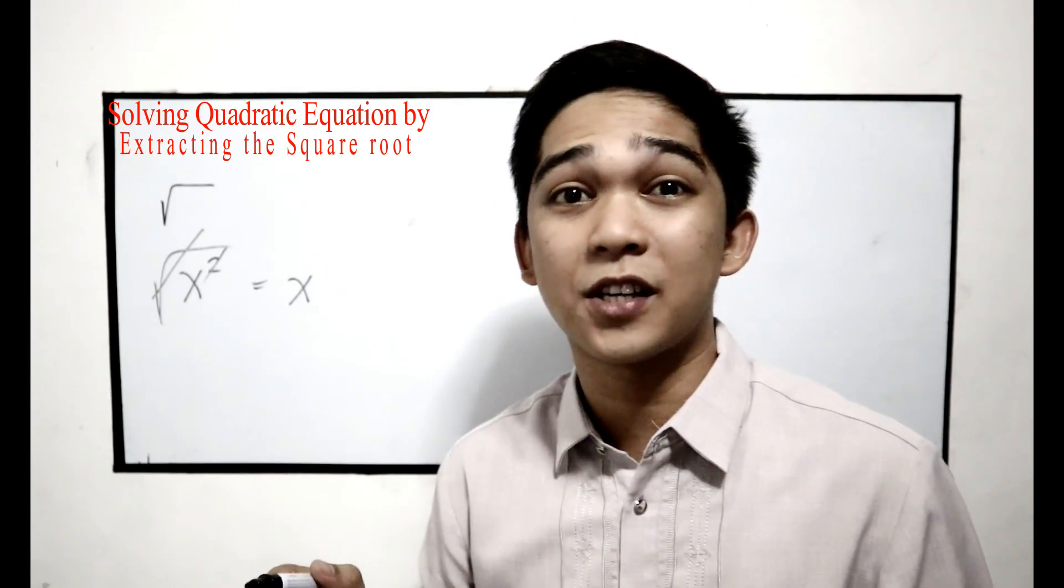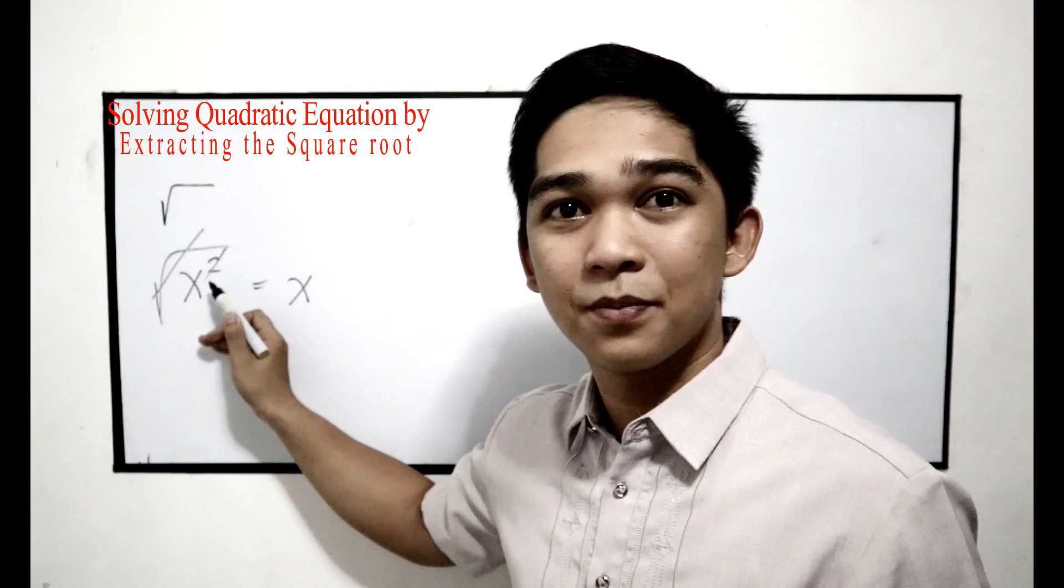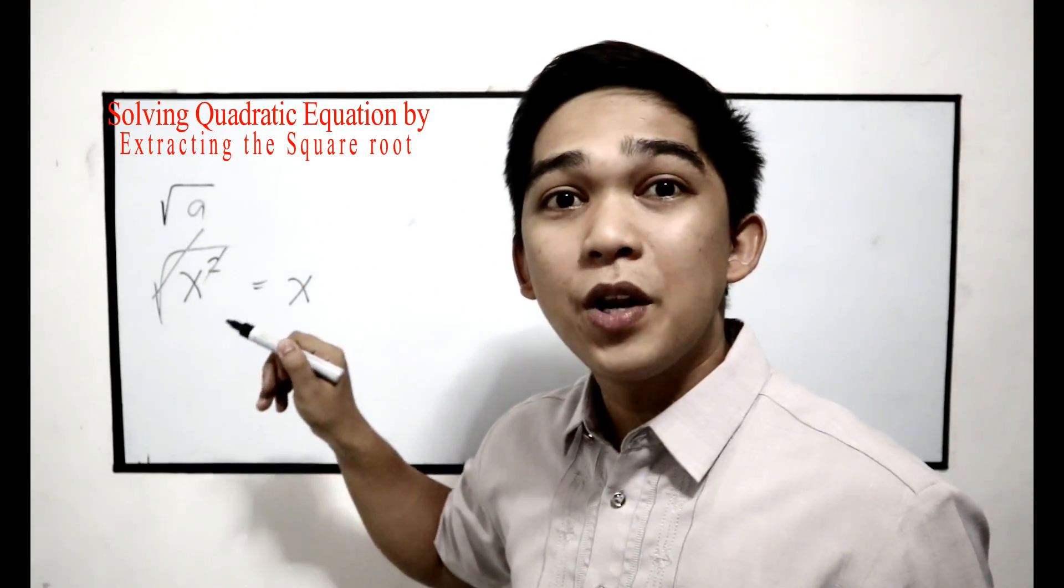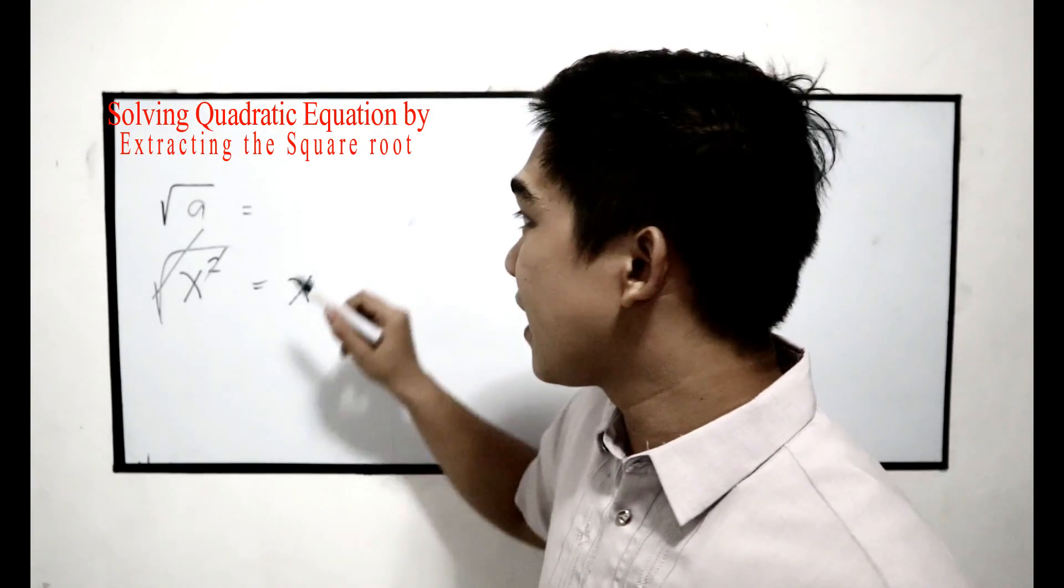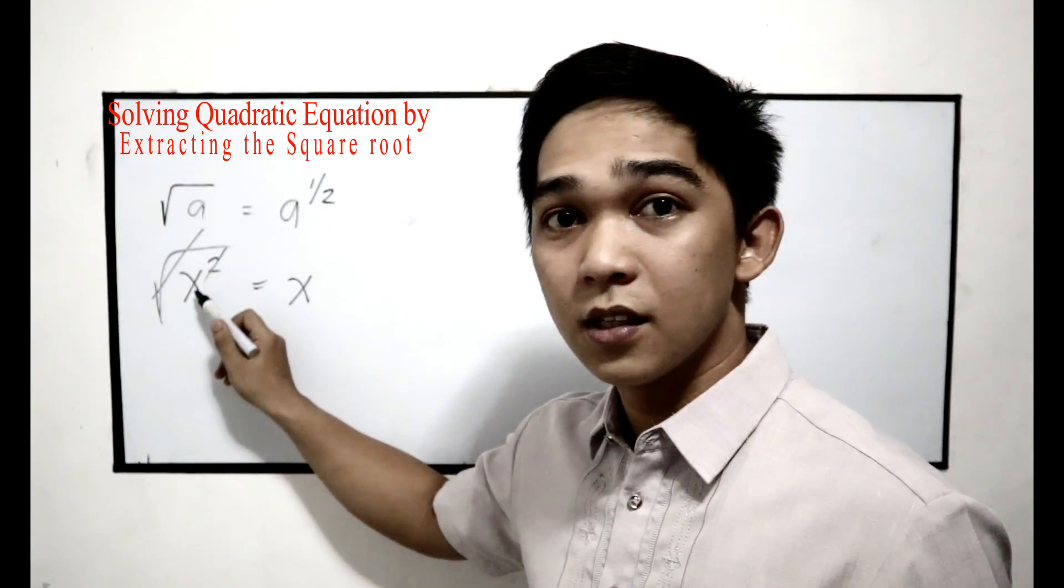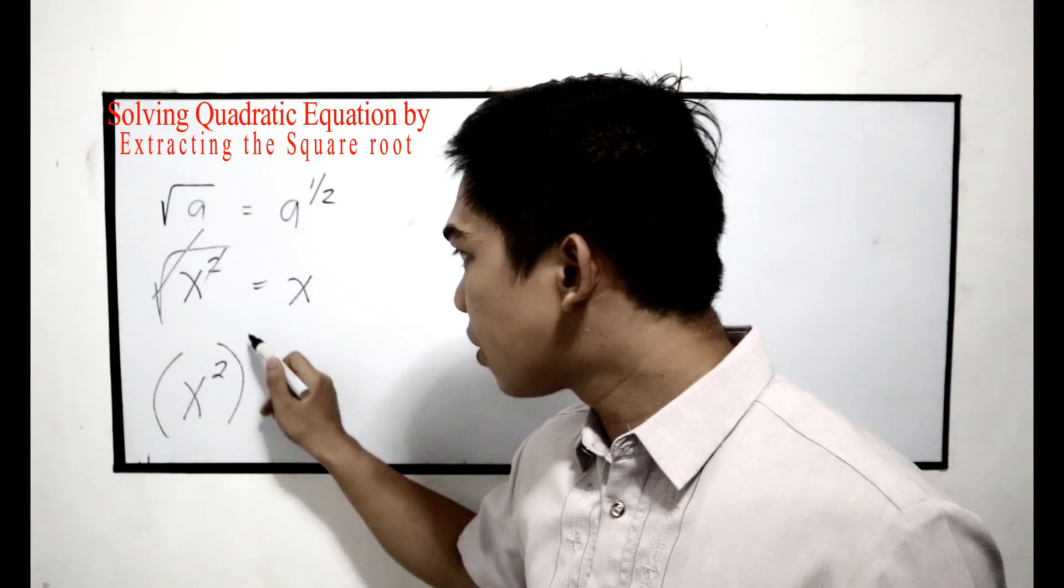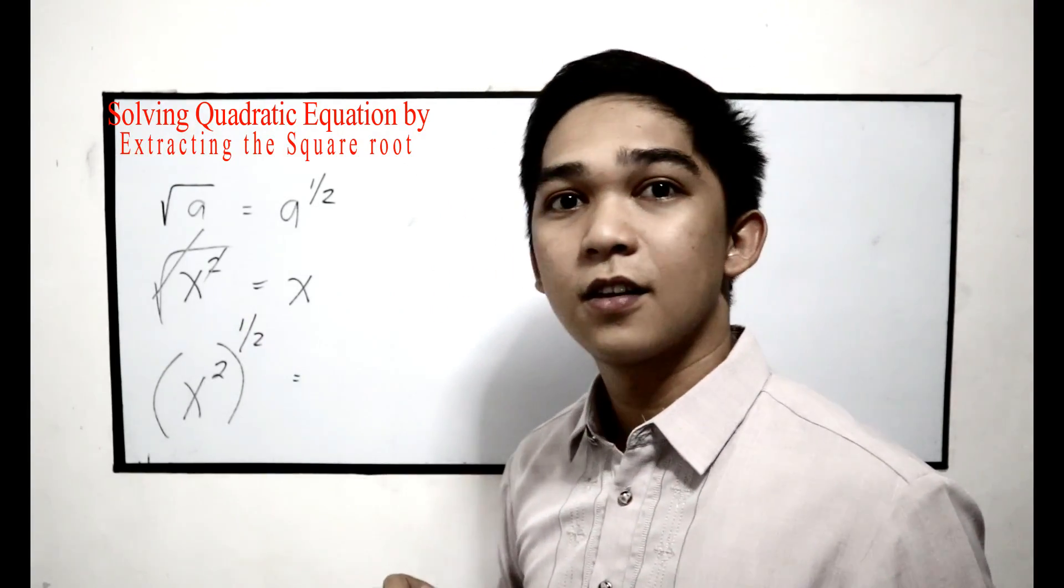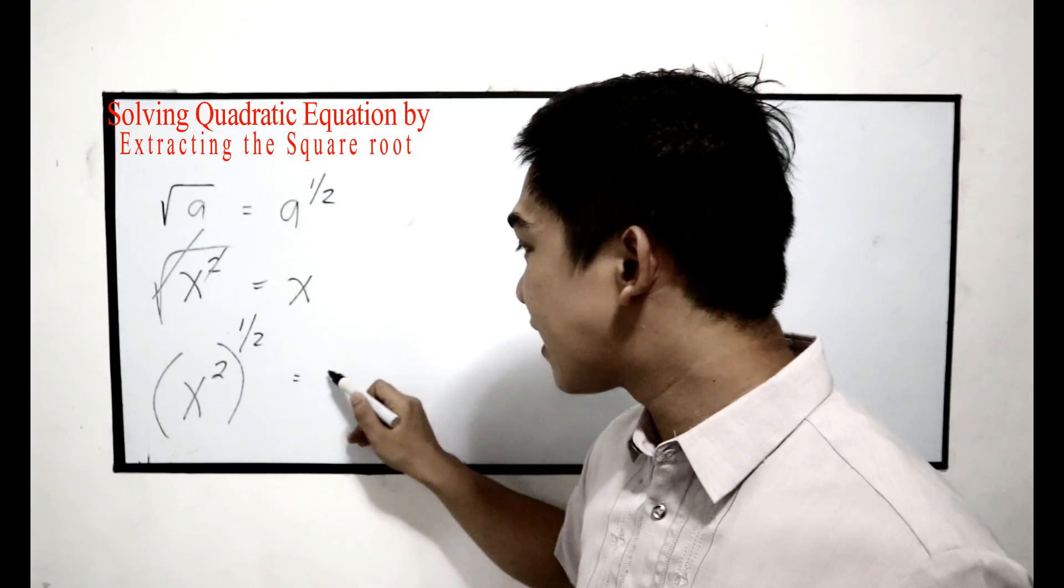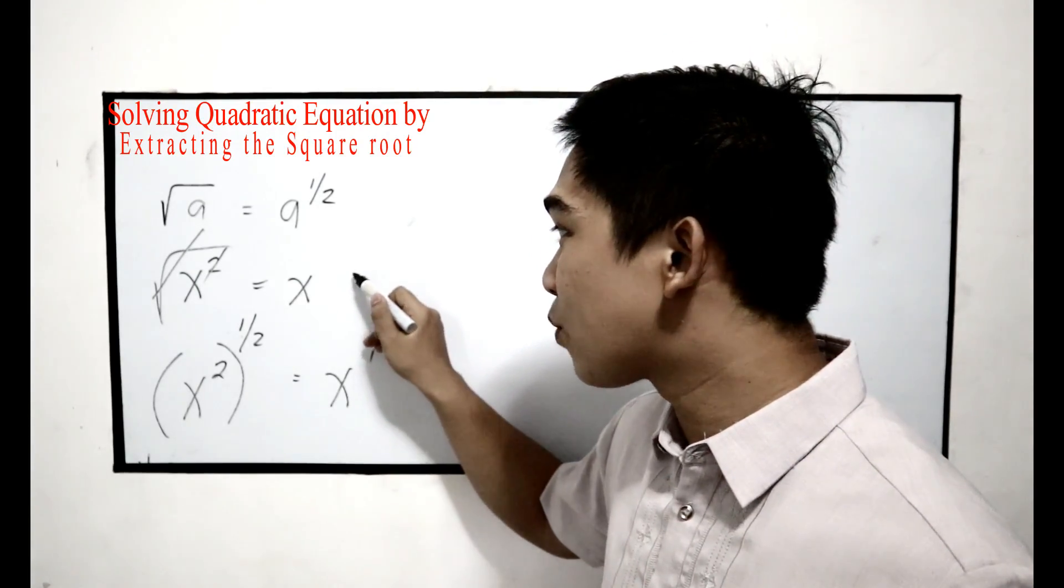Applying your previous lesson about the laws of exponent, why do the square root and square cancel out? Square root of a is equivalent to a raised to 1/2. Applying this, we have x squared raised to 1/2. Power to a power: 1/2 times 2 equals 1. That means x raised to 1 is equal to x.